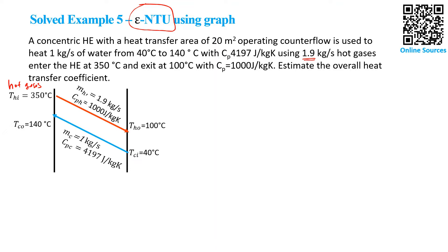On another side of the heat exchanger, we have the cold side. We want to heat water. This is the water stream. It enters at a temperature of 40°C and exits at 140°C. We are given the mass flow rate of water is 1 kg per second, and the Cp of water is 4.197 kJ per kilogram Kelvin. We have to find out three things when we go for NTU.